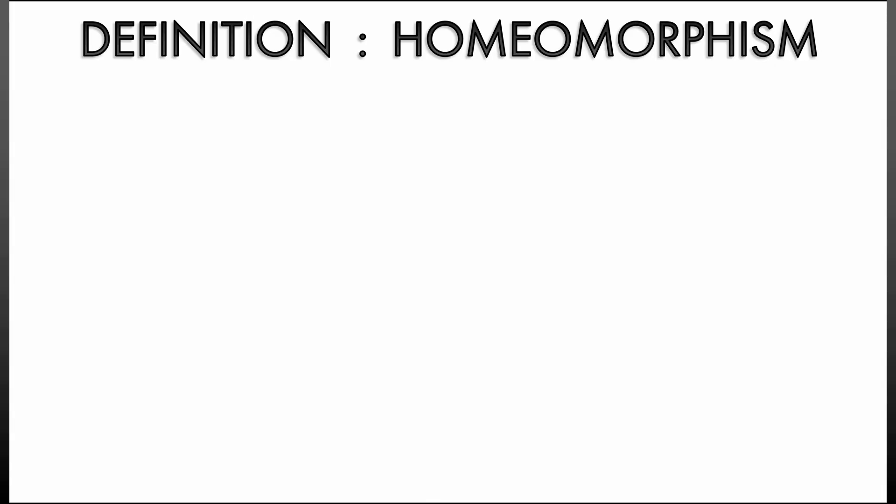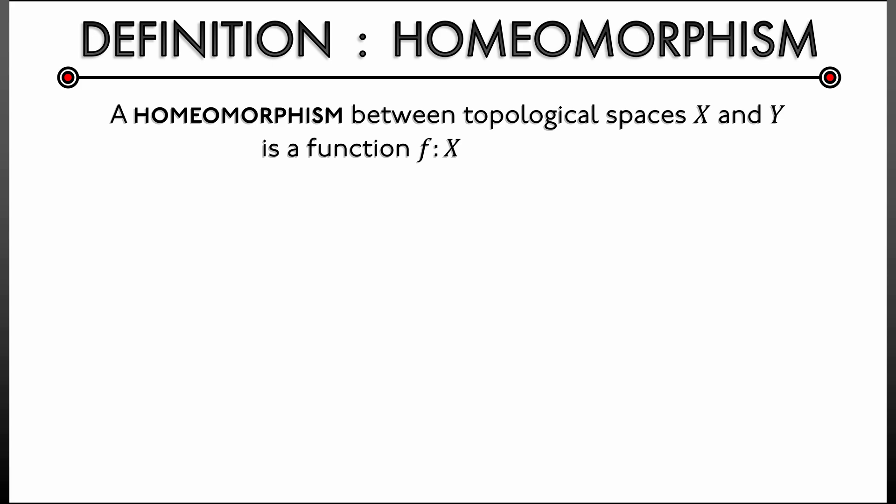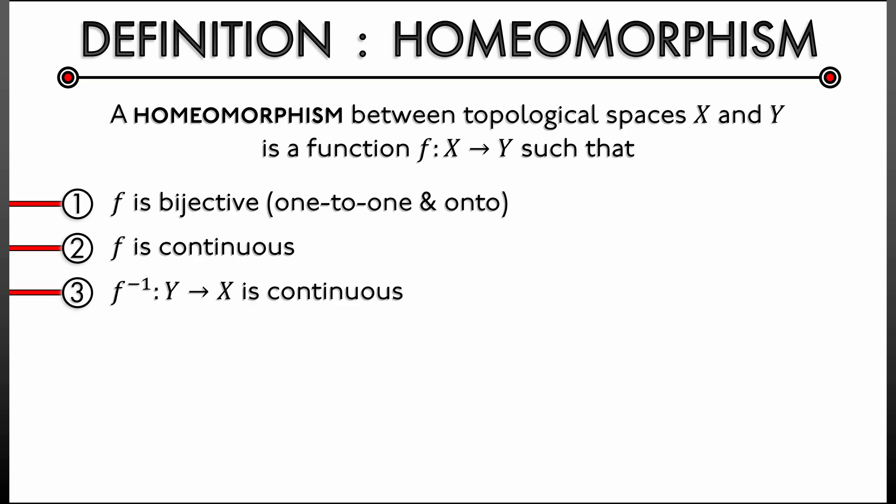And in particular, we can define a homeomorphism between topological spaces. A homeomorphism between two spaces, X and Y, is a function f such that it is bijective. It pairs up points between these two spaces. That means it's one-to-one and onto. And in addition, this homeomorphism has to be continuous with a continuous inverse.